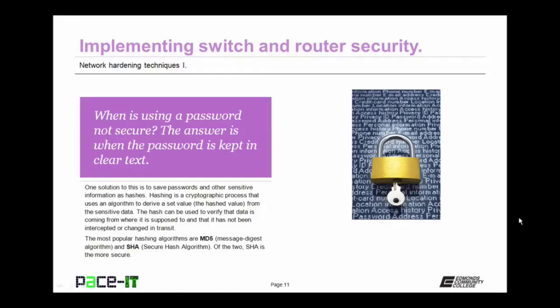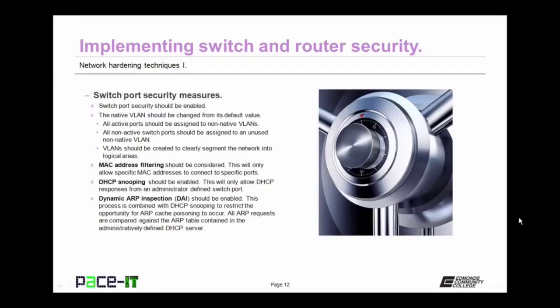Under implementing switch security measures, switch port security measures are vital. Switch port security should be enabled — all enterprise switches are capable of having security measures enabled at the port level, and that should happen. The native VLAN should be changed from its default value. All active ports should be assigned to non-native VLANs, and all non-active switch ports should be assigned to an unused non-native VLAN. VLANs should be created to clearly segment the network into logical, secure areas. A switch port security measure that should be considered is MAC address filtering, which will only allow specific MAC addresses to connect to specific ports.